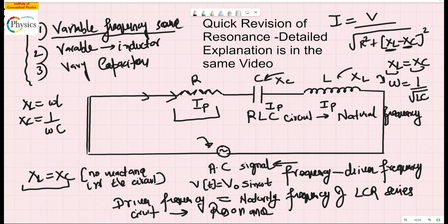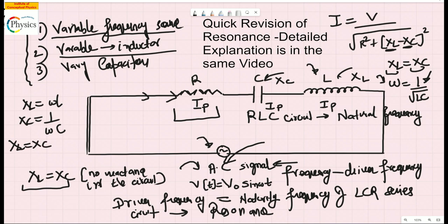You can change the frequency of the AC signal source using a knob until it becomes equal to the natural frequency. Or, if you don't want to touch the driver frequency, you change L so that XL becomes equal to XC. Alternatively, you keep the AC signal fixed and vary C until XC equals XL. These are the three ways to achieve resonance in an LCR circuit.